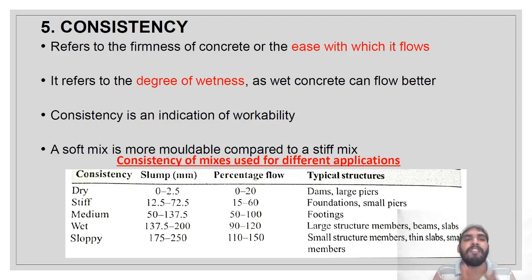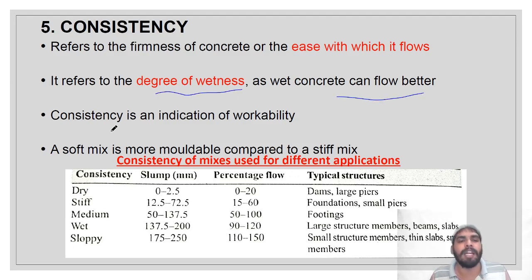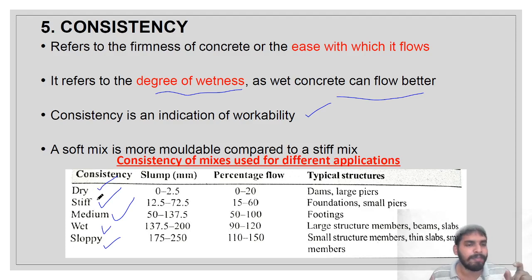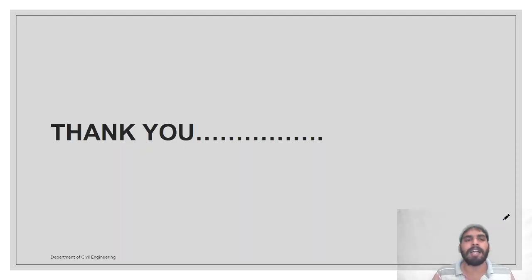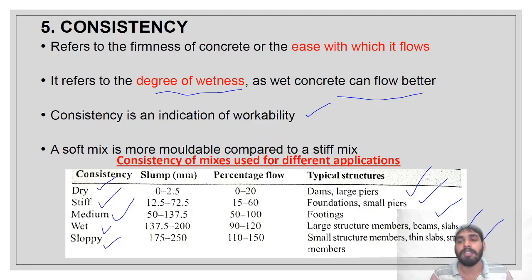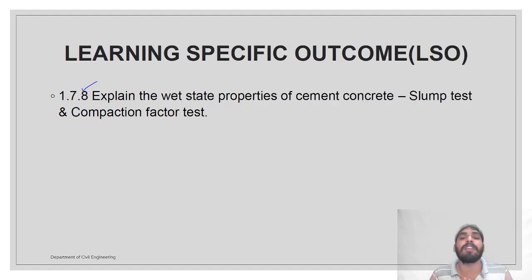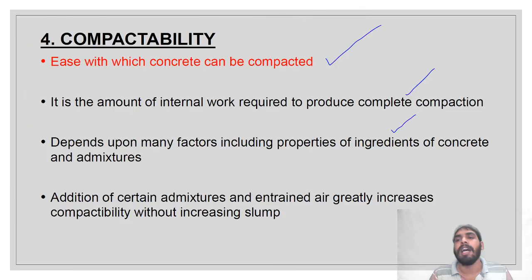Consistency is the firmness of concrete and the ease with which it flows — its flowability. The degree of wetness is an indication of workability. Mixes are classified as: dry mix (0 to 2.5 mm slump), stiff mix, medium mix, wet mix, and sloppy mix. This concludes the properties of fresh concrete; we will continue in the next class.